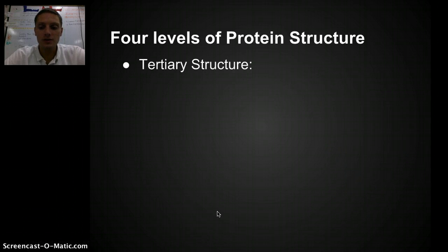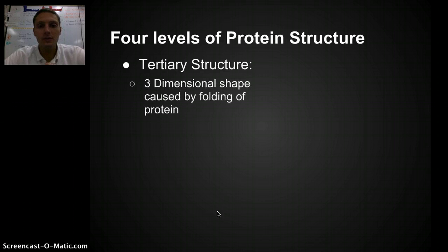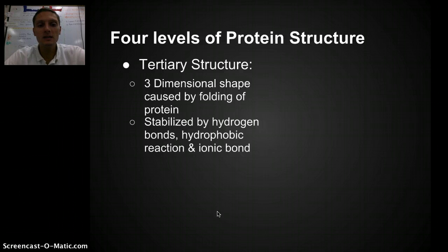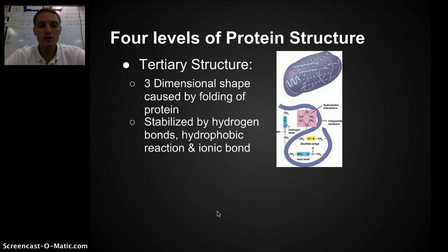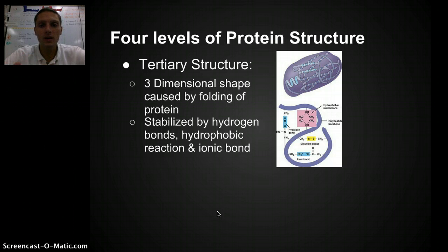The third structure is called the tertiary structure, and this is the three-dimensional shape. This is where the protein actually starts to fold into its particular shape, and it's stabilized by hydrogen bonds, hydrophobic interactions, and ionic bonds. Rather than just being a helix or a beta-pleated sheet, we actually see this fold into the protein's actual shape and structure.